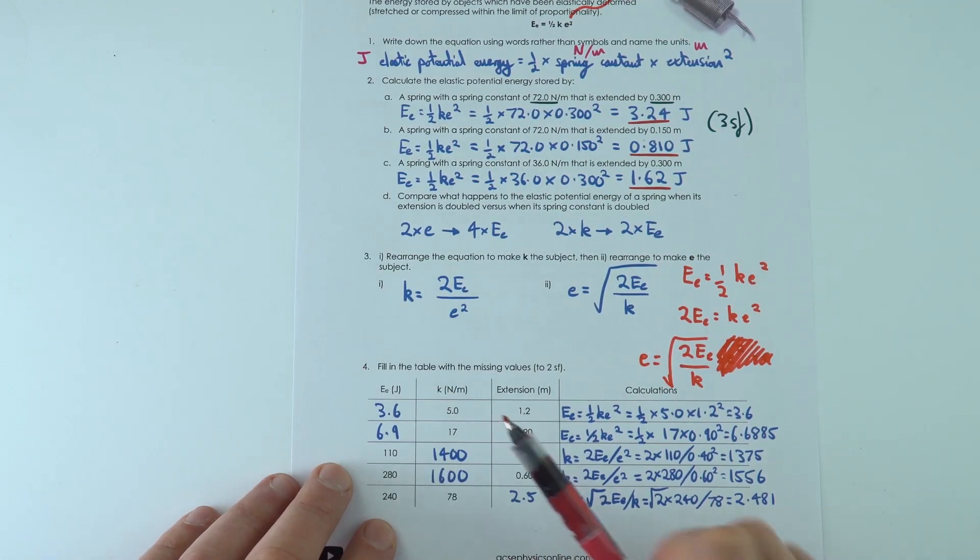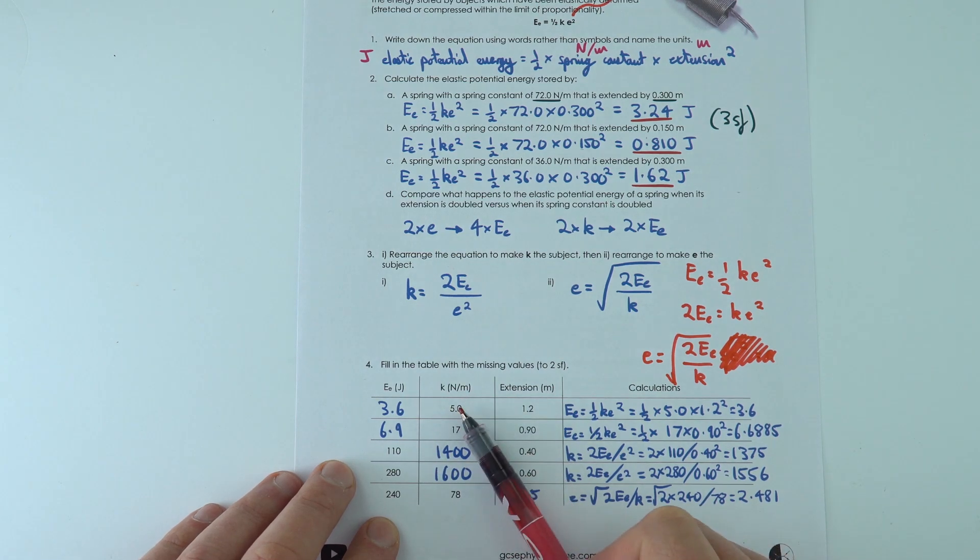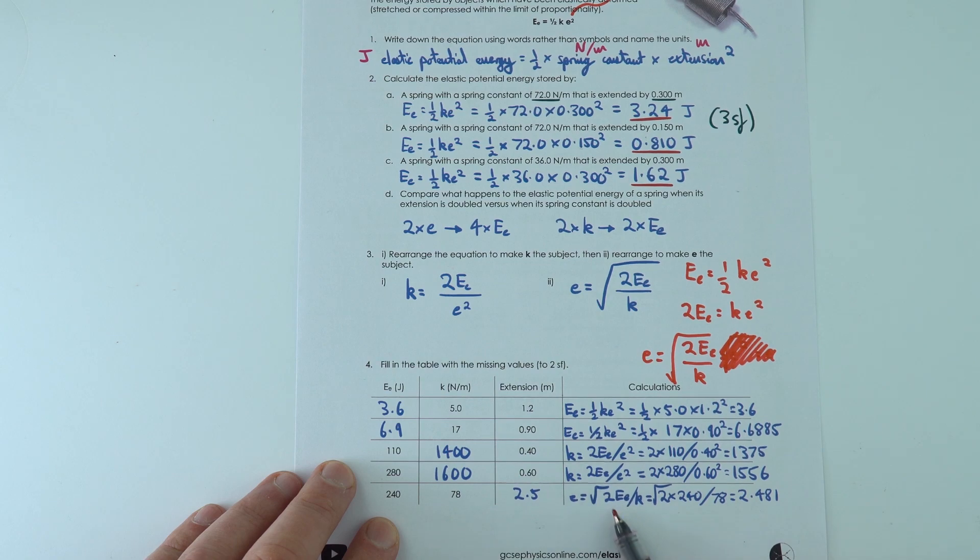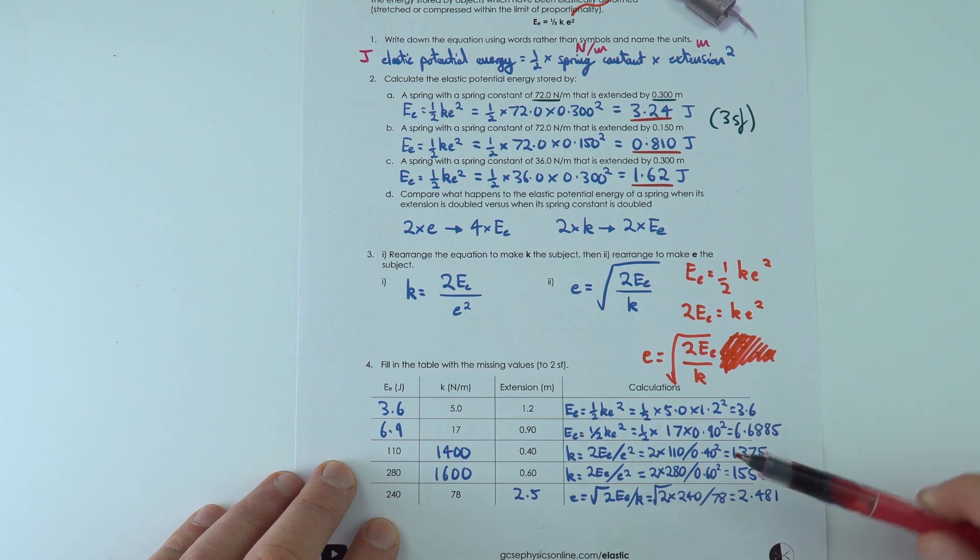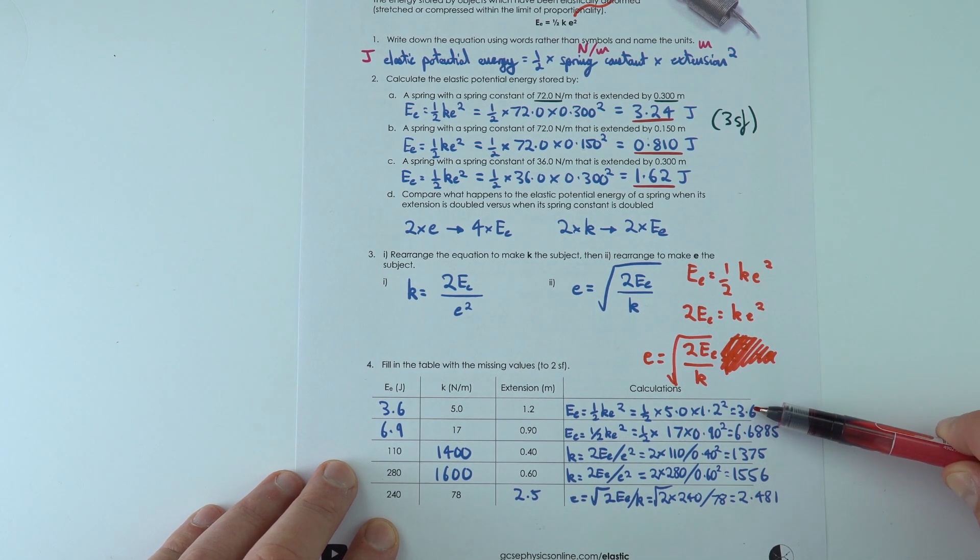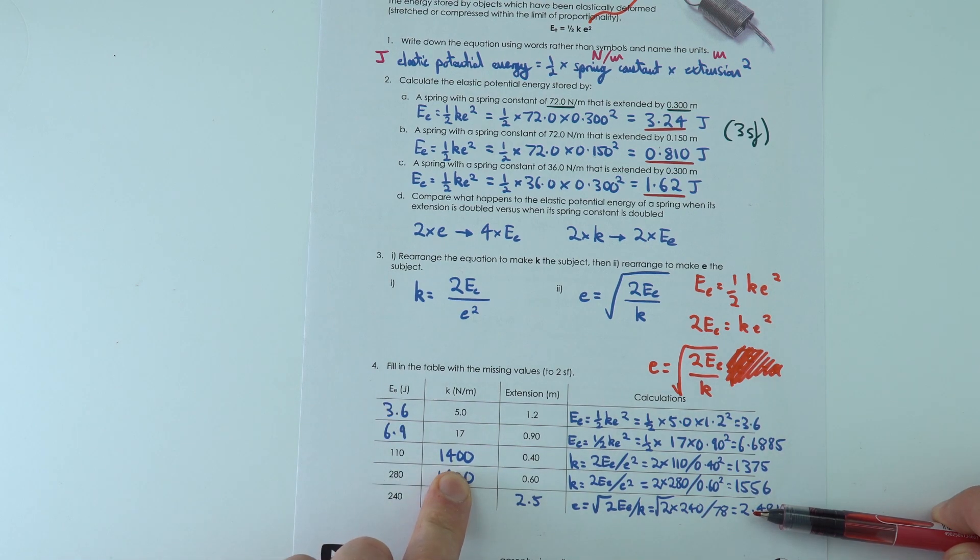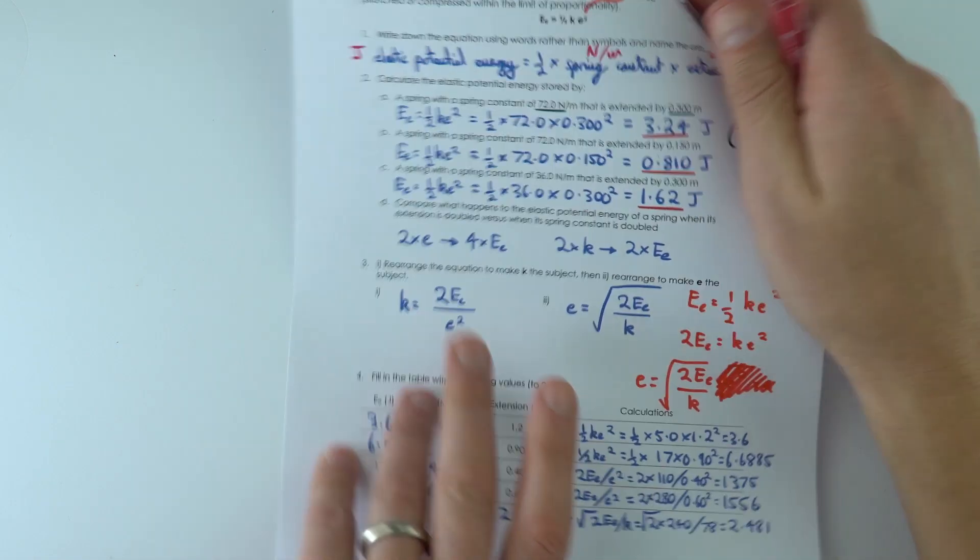And over here, all of our values are going to be given to two significant figures like the raw data in the table. All I've done is I've selected the right equation, put the numbers in. That's my answer I got on my calculator, which I then put to two significant figures over here.